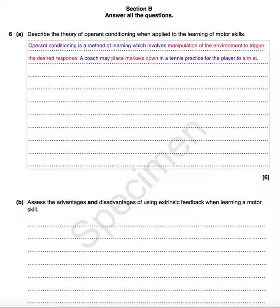First, I'm going to define it. Operant conditioning is a method of learning which involves manipulation of the environment to trigger the desired response. That's the definition, but of course I want to give a practical example to help illustrate that. A coach may place markers down in a tennis practice for the player to aim at — that could be one example of operant conditioning.